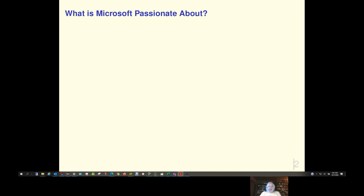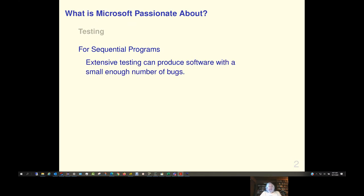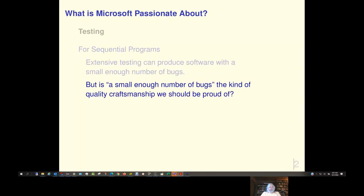So, what is Microsoft passionate about? Testing. Very passionate about testing. Now, for sequential programs, extensive testing can produce software with a small enough number of bugs. But is small enough number of bugs the kind of quality craftsmanship we should be proud of? Marcus is going to talk about that a little later.